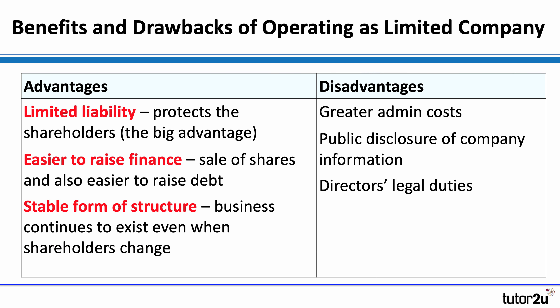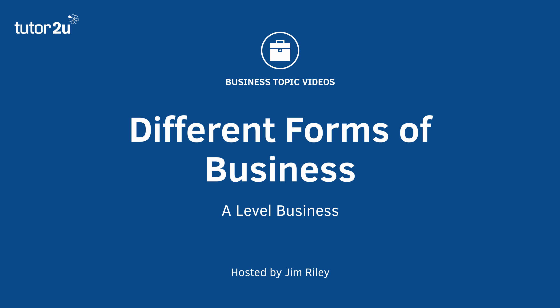The protection offered by limited liability is the most important point about limited companies. Setting up a company has a little bit more admin and paperwork, and you have to disclose information. But that is completely outweighed by the advantages: the protection that shareholders have of limited liability, and also it makes it easier to raise finance because a limited company is a more stable form of business — the business continues even if the shareholders change. That's quite complicated, but hopefully useful — a quick overview of the different forms of business.